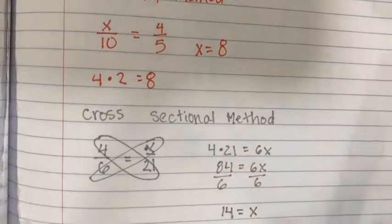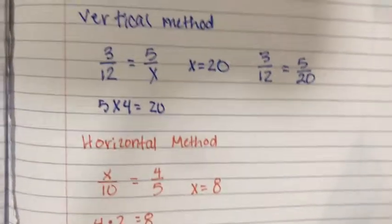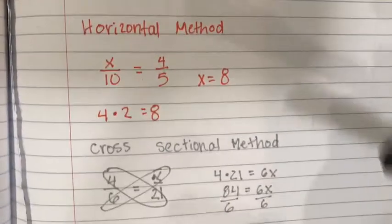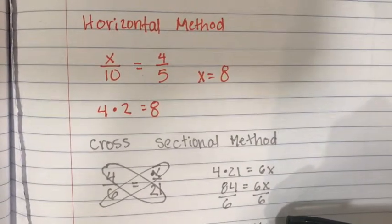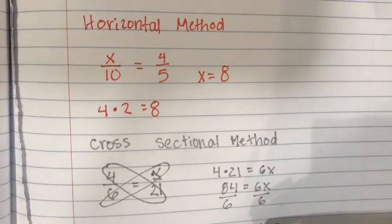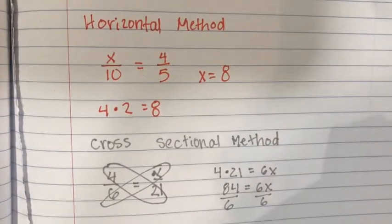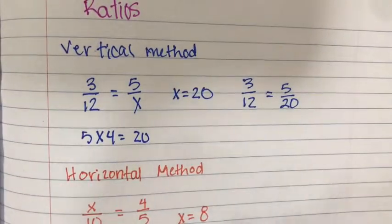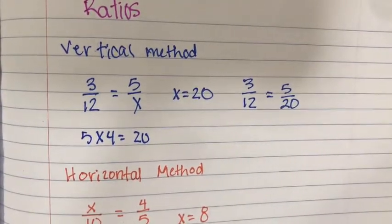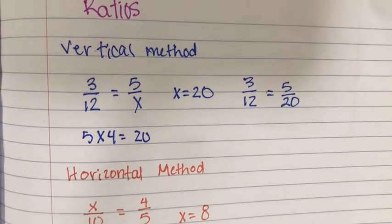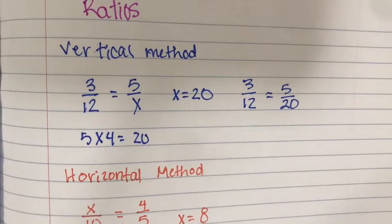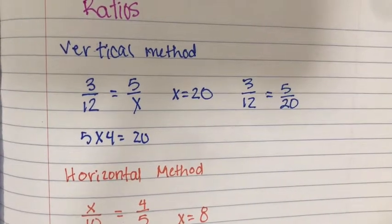Those are three different methods of solving for ratios. I personally prefer the cross sectional one because it's straight algebra and you're able to get the answer instead of having to think about what number times what would equal x. So that's my preference, but those are the three different methods for solving ratios.